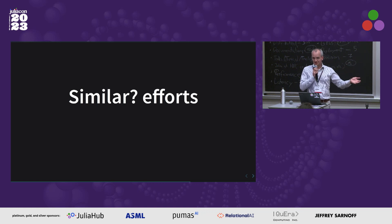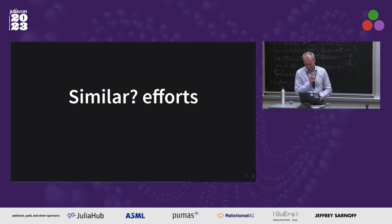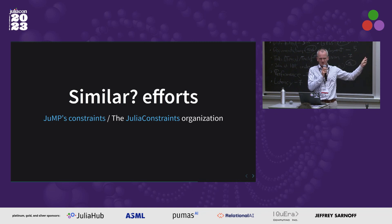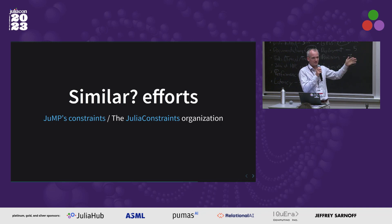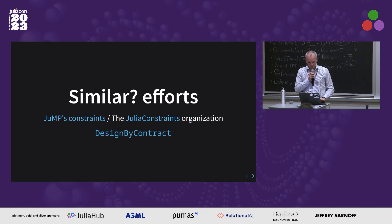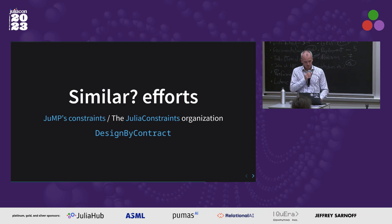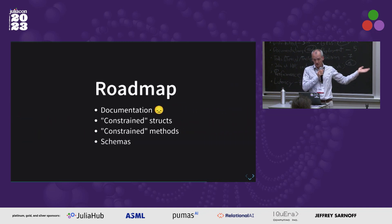Some people might think, aren't there similar efforts? Well, yeah — honestly I haven't looked too deeply into them, I just wanted to write this thing. There's JuliaConstraints and JuMP uses constraints, but as far as I know they serve a slightly different purpose, and it didn't jump out at me that I could do what I wanted with them. There is another package by someone I used to work with called DesignByContract, which is actually pretty neat — it's for putting contracts on method signatures, which I kind of like, and I think we can actually do it with this.